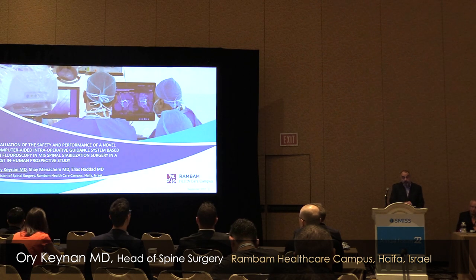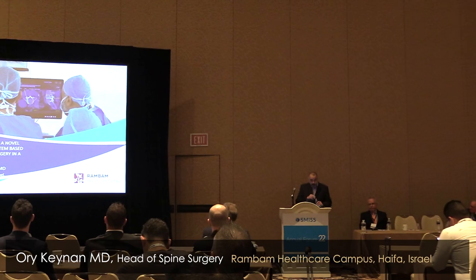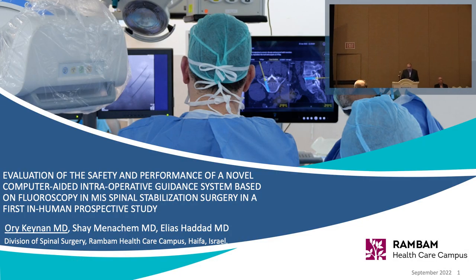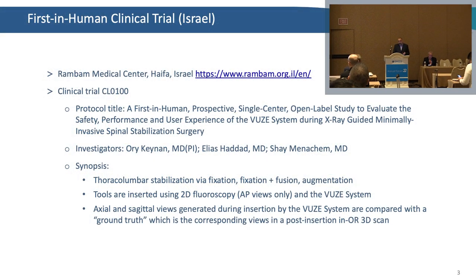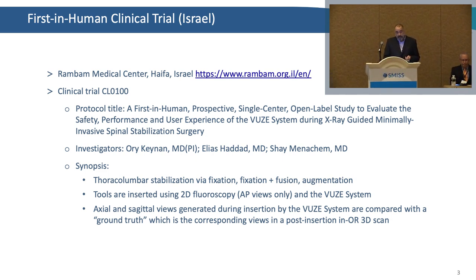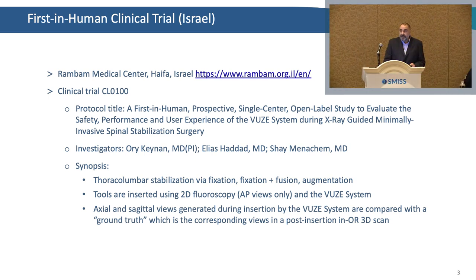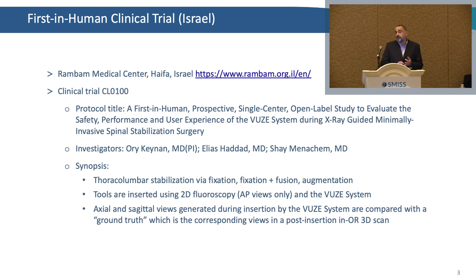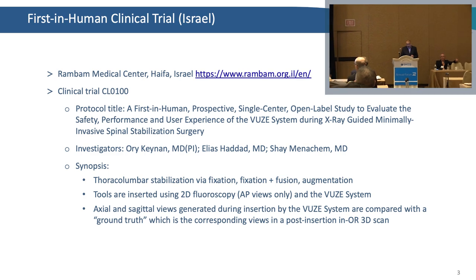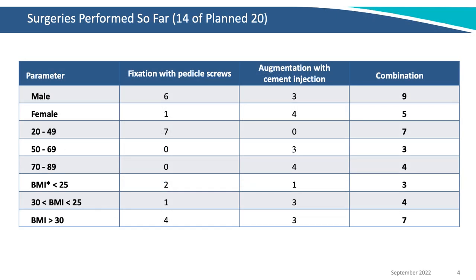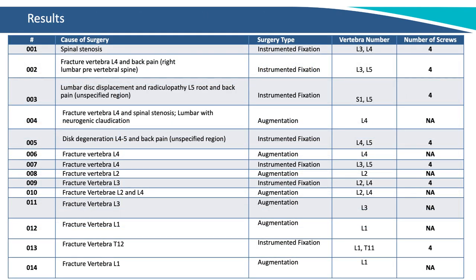My name is Ori Kainan. I'm going to talk about the first-in-human trial we did at Rambam — a large hospital and the biggest trauma center in Israel. The purpose of the trial was to test for safety, performance, and user experience of the Views system, approved by the IRB. The patient population was patients scheduled for kyphoplasty or MIS percutaneous screw insertion. So far we've enrolled 14 patients — nine males, five females, ages ranging from 20 to 89.